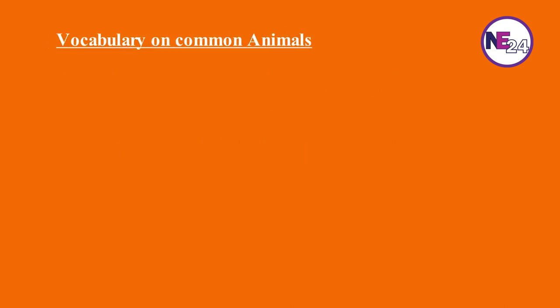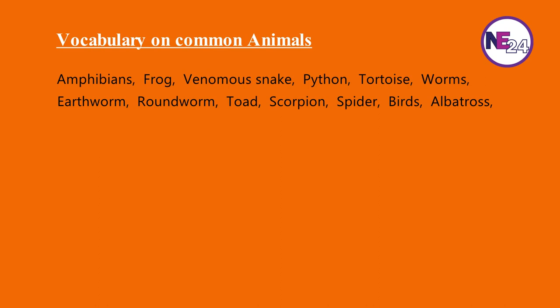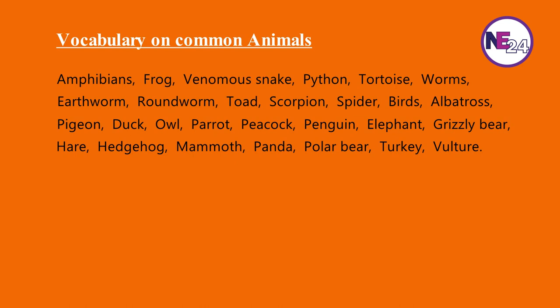English vocabulary on common animals. Amphibians, venomous snake, python, tortoise, worms, earthworm, roundworm, toad, scorpion, spider. Birds: albatross, pigeon, duck, owl, parrot, peacock, penguin, elephant, grizzly bear, hedgehog, mammoth, panda, polar bear, turkey, vulture.